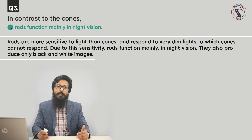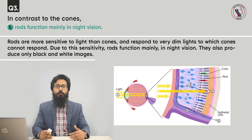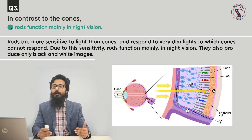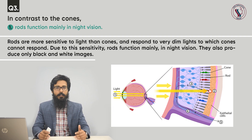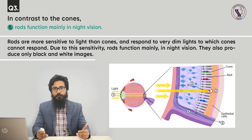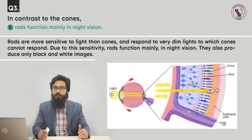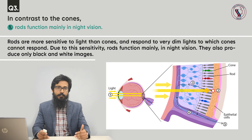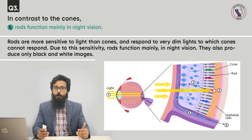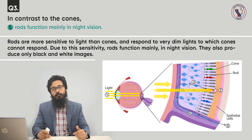Rods are more sensitive to light than cones and respond to very dim light to which cones cannot respond. Due to this sensitivity, rods function mainly in night vision. They also produce only black and white images. In simple terms, rods are responsible for night vision and cones are responsible for color vision. When you want to see an image in detail with precise vision, you must have a good amount of light. If any object is in good light, you can see that object with more detail compared to when it is in darkness or less light.